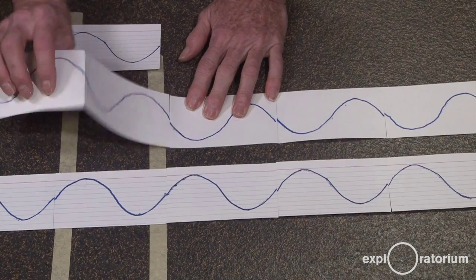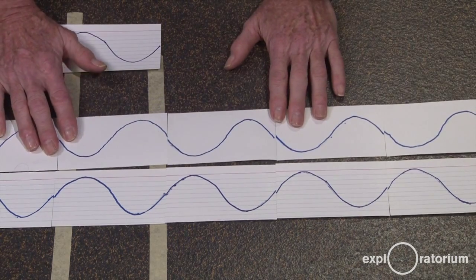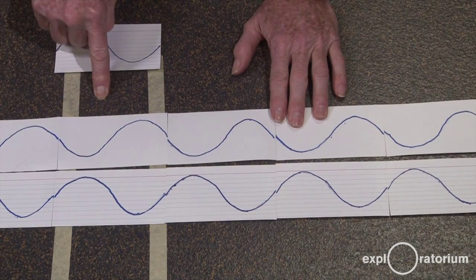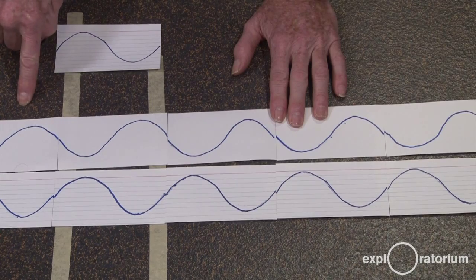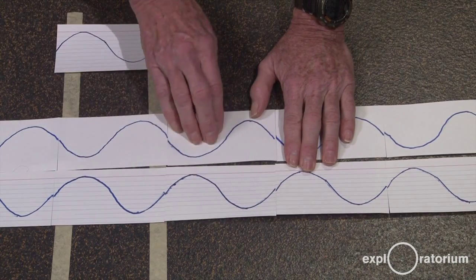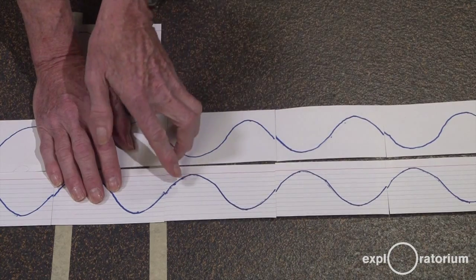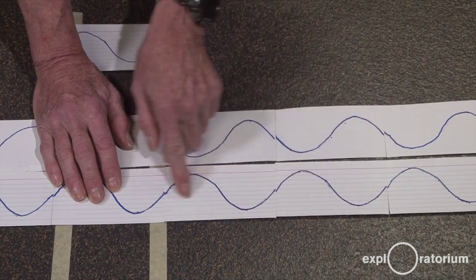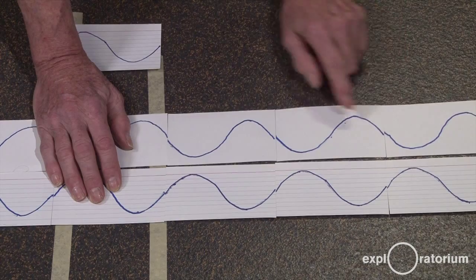That wave going from slow speed water and soap to high-speed air does not flip over. So these two chains of paper waves now represent the light that's reflected from the front and the back of the soap film.